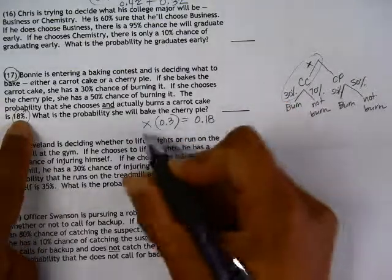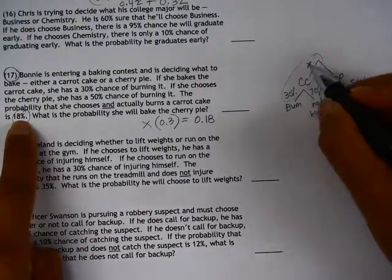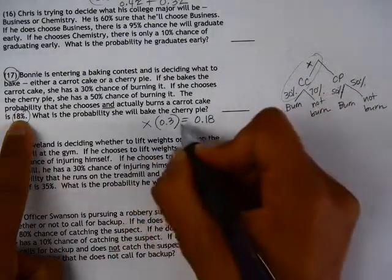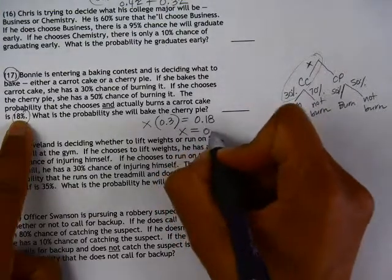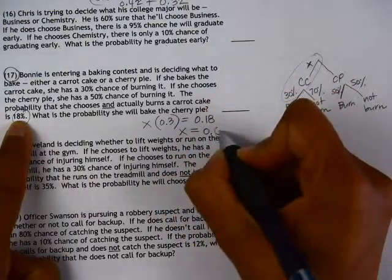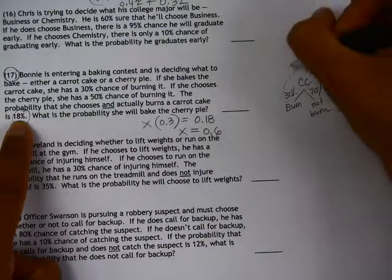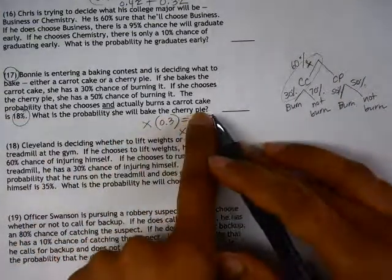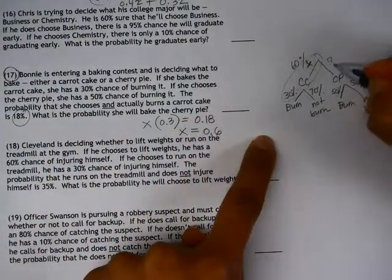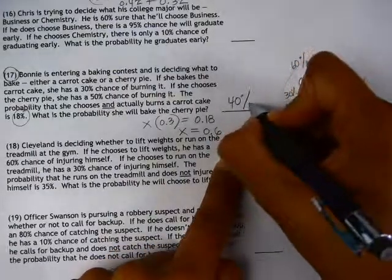So we're basically working backwards here and trying to figure out what is x, the probability of her making a carrot cake. x times 0.3 equals 0.18. If I divide by 0.3, this is 60% chance that she would make the carrot cake in the first place, so this would be 60%. The question is, what's the probability that she will bake the cherry pie? So we're actually figuring out this probability, 100 minus 60% would be 40%.